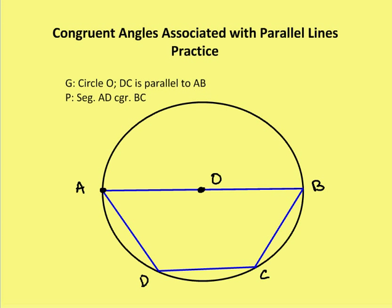The first problem: we're given circle O and we're also given that DC is parallel to AB. So let's mark this up. And I want to prove that segment AD is congruent to BC.